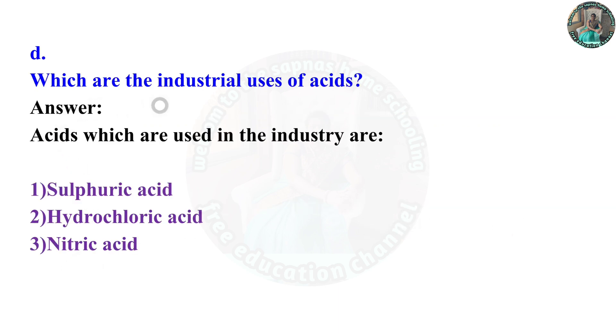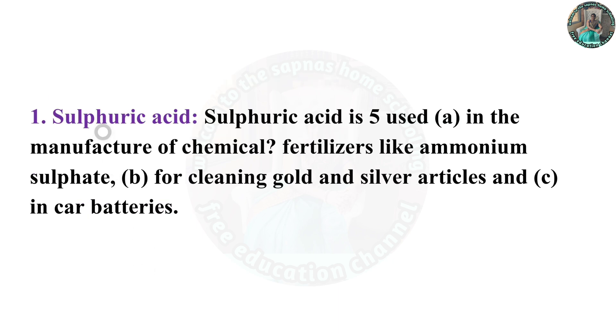Which are the industrial uses of acids? The acids used in industries are sulfuric acid, hydrochloric acid, and nitric acid.